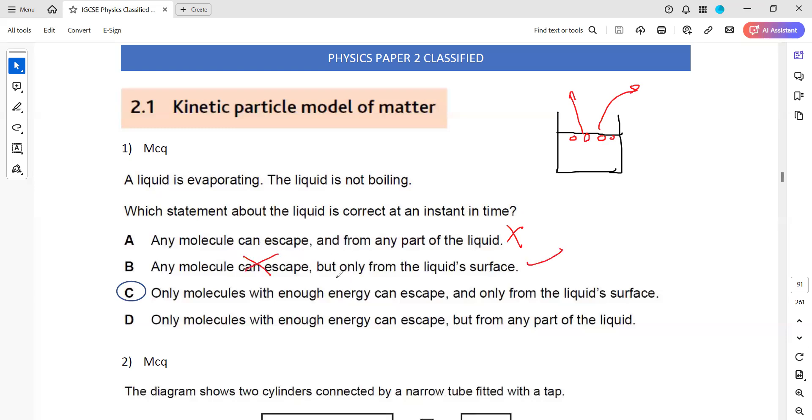This statement is correct: liquid surface, but not any molecule. It should be the most energetic molecule. Only molecules with enough energy can escape and only from the liquid surface, that's correct. This is explaining the evaporation, and evaporation occurs when the most energetic molecules or the molecules which are having sufficient amount of energy escape the liquid surface. That's why C is the right answer.